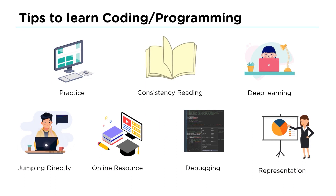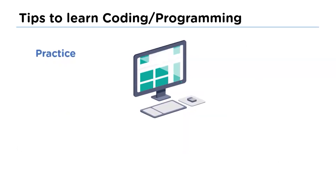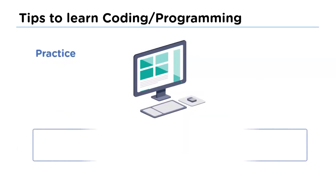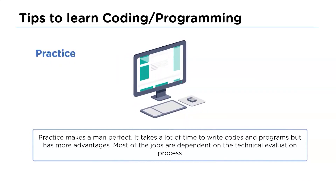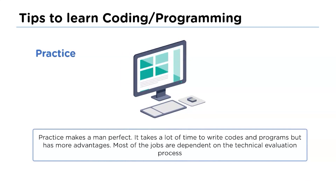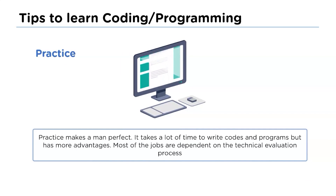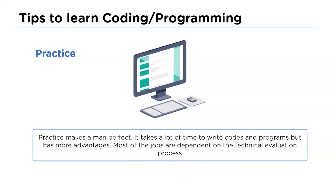The first tip is practice. Practice is the best way to learn coding or programming — it takes time but helps more in gaining knowledge. When you apply for a software job there will be a technical round where they ask you to write code. Practicing helps you clear those rounds quite quickly and also improves your ability to identify mistakes by yourself.